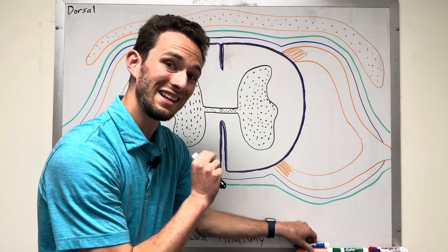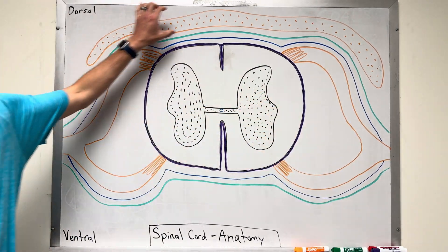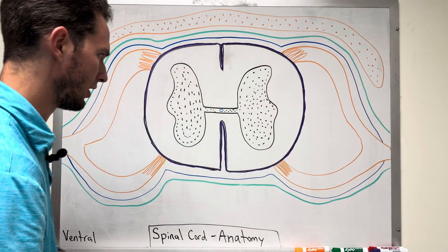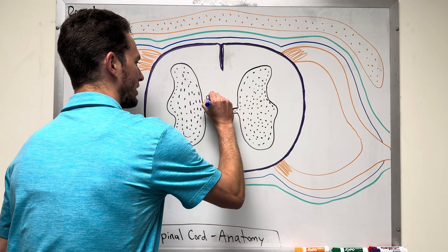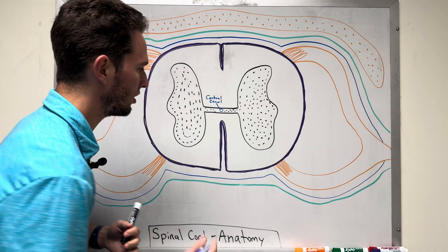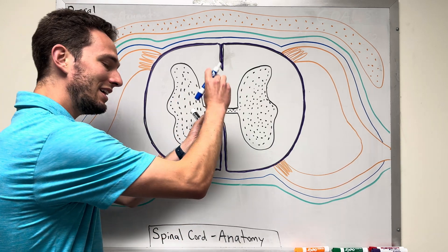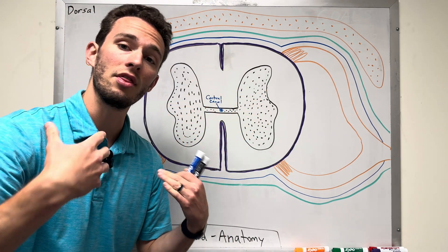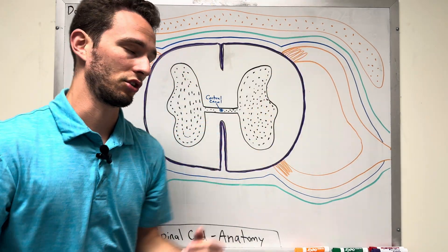We're going to work first from inside out — talking about the actual tissue of the spinal cord, the nerves, and then the meninges on the outside. In the center, we have the aptly named central canal, which contains cerebrospinal fluid — basically lubrication with some salts, electrolytes, and water. It lubricates the inside of the spinal cord and is consistent all the way up to the ventricles of the brain, nourishing both the spinal cord and the brain.